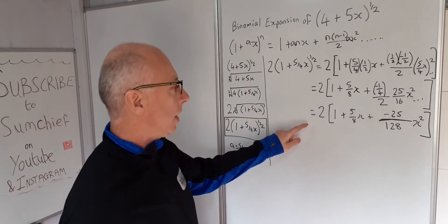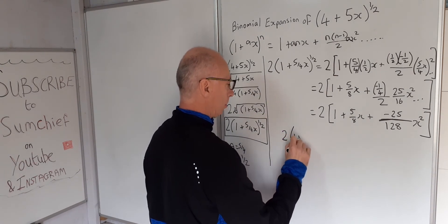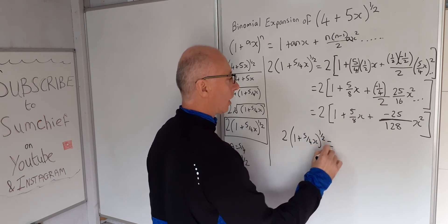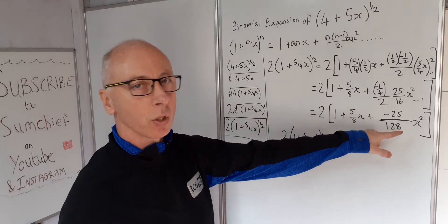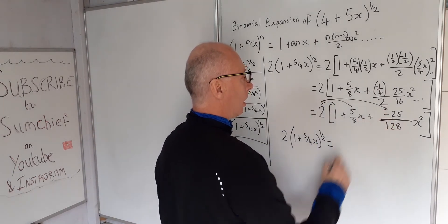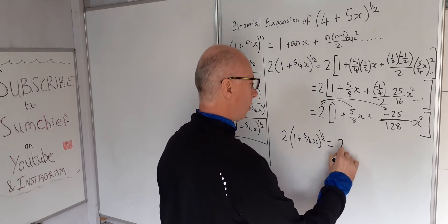So now what we can do is we can write this down here, give us our answer, 2 times 1 plus 5 over 4 x to the power of a half equals, distribute the 2 into all these terms, and we can also distribute this plus and minus.